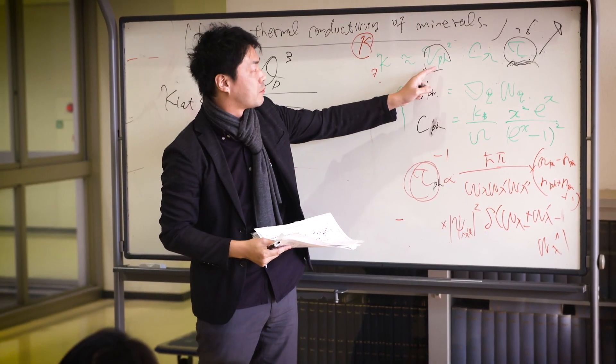Our simulations indicated that bridgmanite, the most abundant mineral in the lower mantle, transformed to the post-perovskite phase at around 120 GPa and 2500 K. This suggests that the whole mantle convects globally.